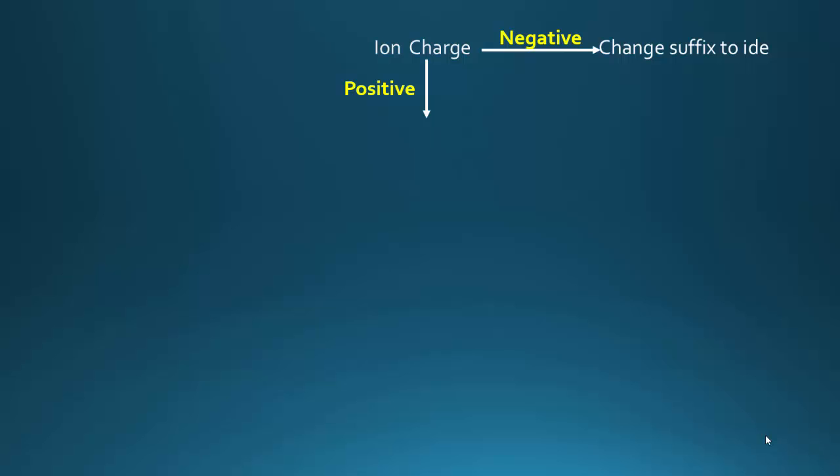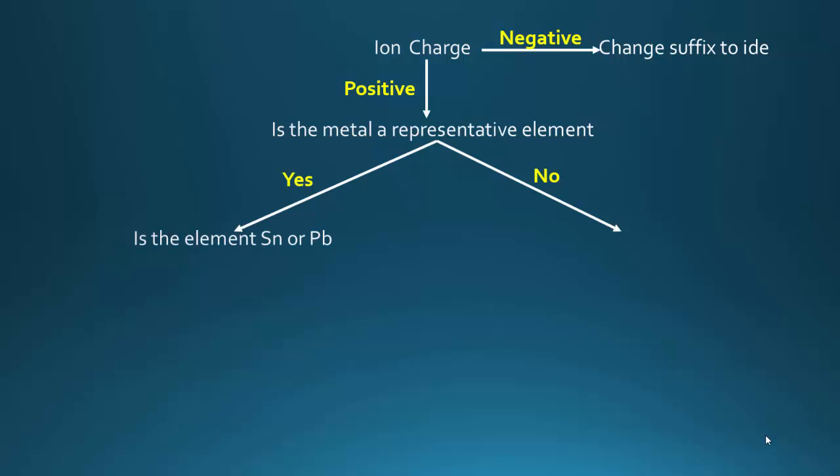If you have an ion with a positive charge, a cation, you need to ask: is the metal from the representative elements? Only two possible answers, yes and no. If the answer is yes, you then have to say, is the element tin or lead? Only two possible answers, yes and no.